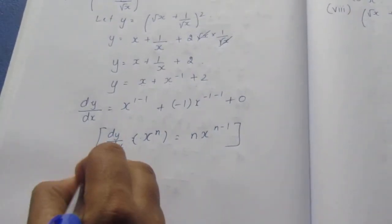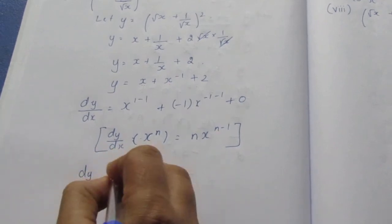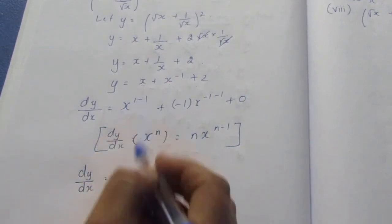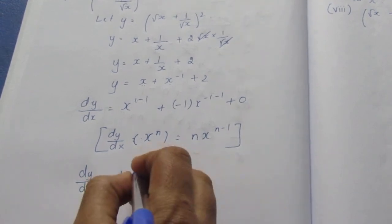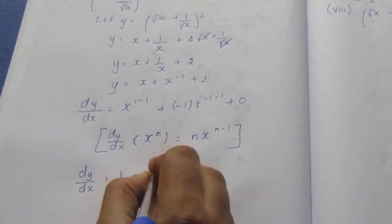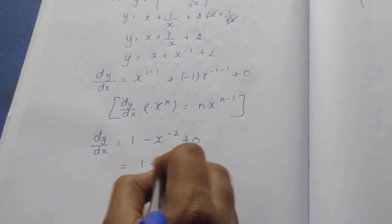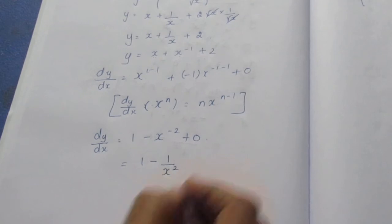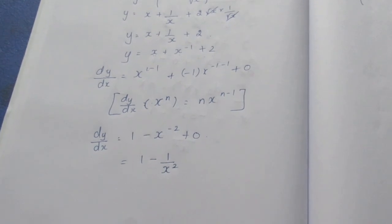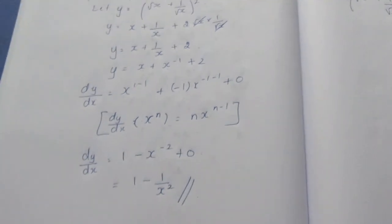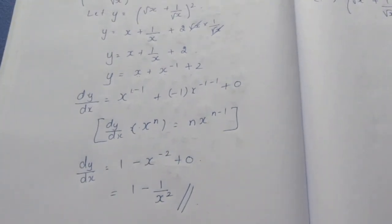So dy by dx is equal to 1 minus x power minus 2 plus 0. Simplifying, 1 minus 1 over x squared is the final answer for this sum. Thank you.